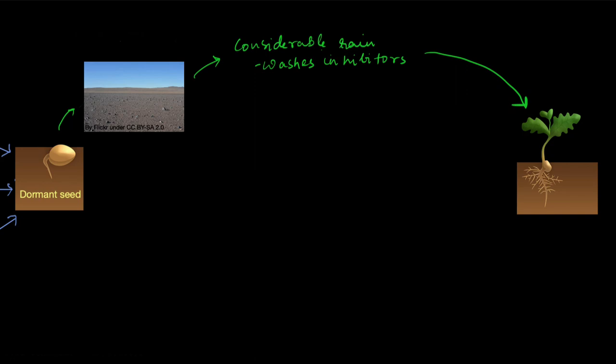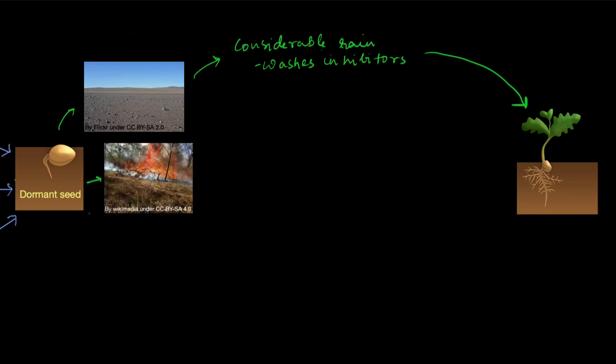So what to do? Just make the seed dormant and wait for better conditions. So what are these better conditions? Sometimes a forest fire actually works out for the best. If there is a forest fire, most of the trees and plants will die. Now what happens is, for some dormant seeds, this extreme heat will make the seed coat permeable.